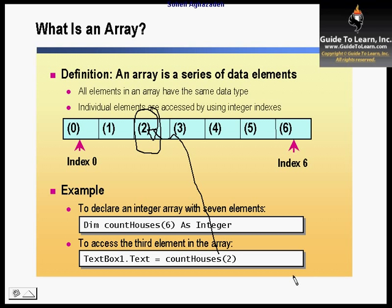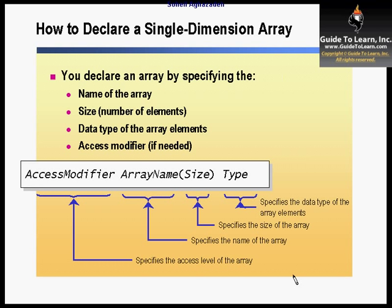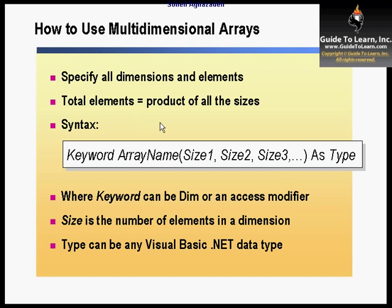To declare a single-dimension array: specify the access modifier, the array name, the size, and the type. You can also take advantage of the declaration and specify the value for every single member that way — specify the keyword, the array name, and specify the values. That automatically gives you not only the membership but also the values. The keyword can be Dim or an access modifier. The size of elements would be available for multidimensional arrays as well, giving you multiple dimensions within the array.